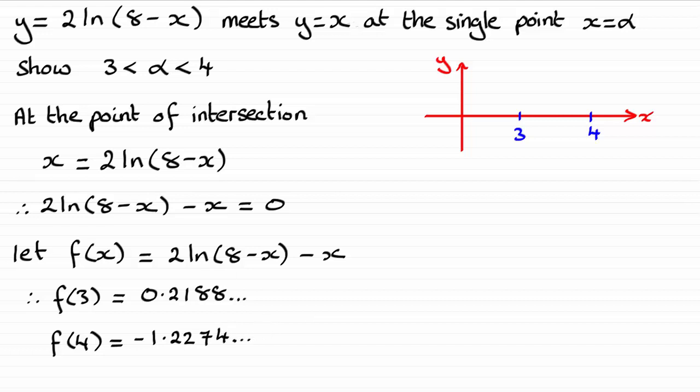So what I've got here then is a curve that at 3, it's a positive value, let's just say it's there. At 4, it turns out to be a negative value, let's say it's there.